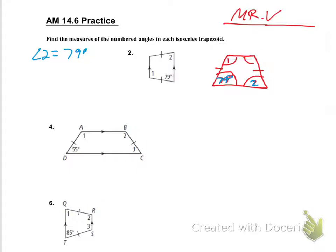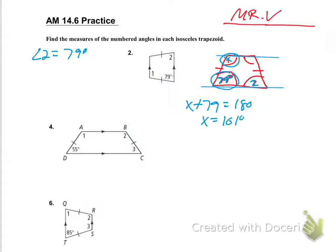Since this line right here is parallel to this line, that means that angle one is going to be supplementary with the 79-degree angle. So I could just call angle one x. Then x plus 79 is equal to 180 degrees, so x would equal 101 degrees. That would mean angle one is equal to 101 degrees.